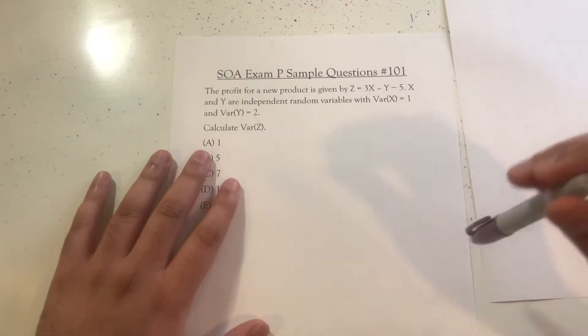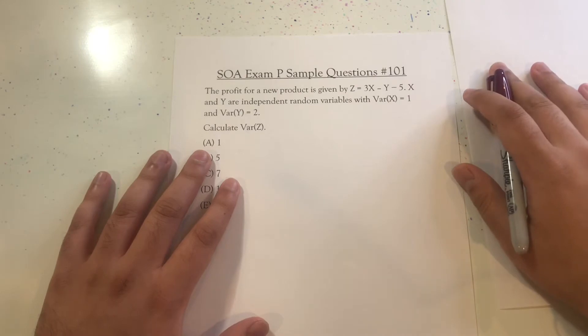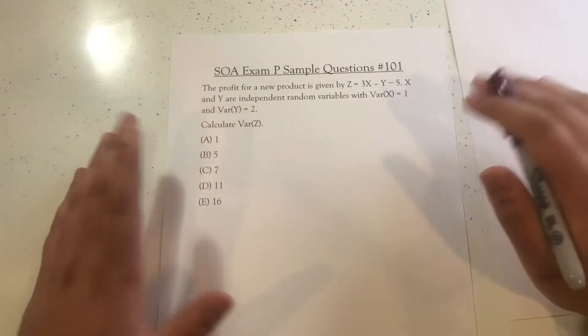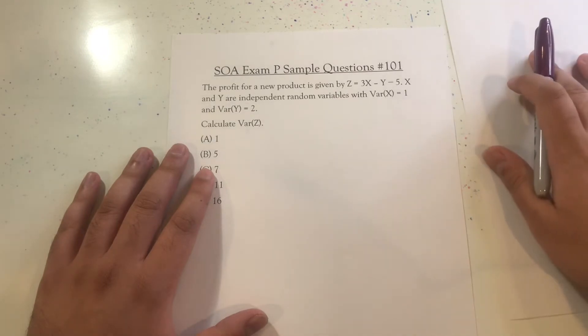All right, so in this video, we're going to go through sample question 101 from the Society of Actuaries exam P, list of sample questions. The question reads,